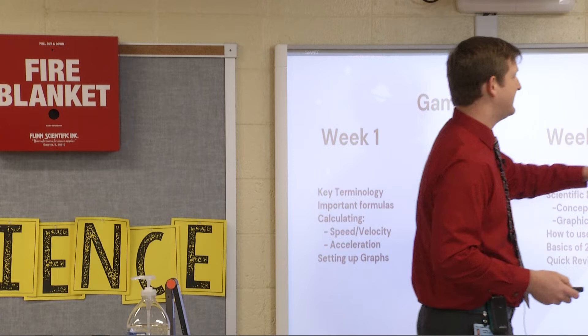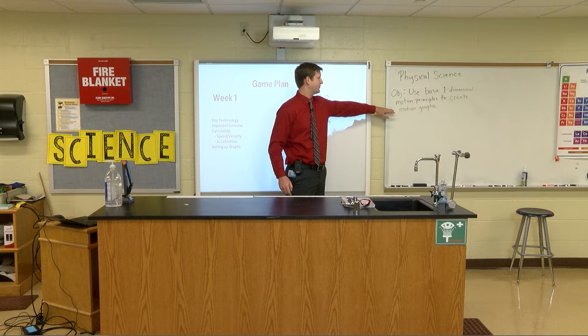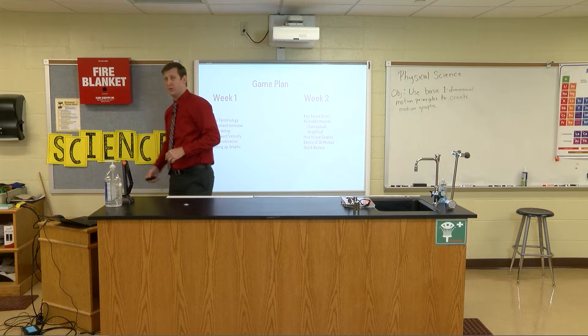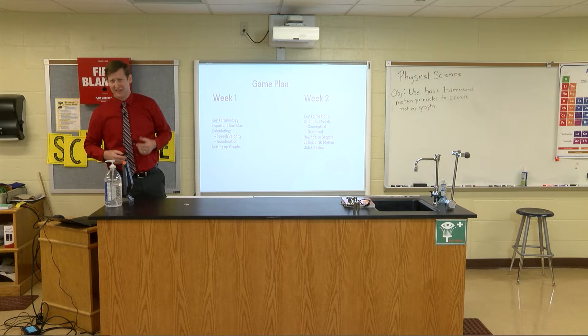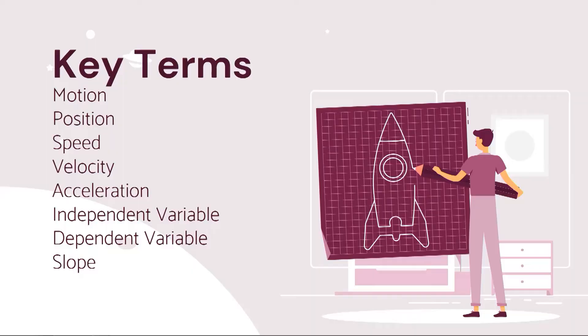Our objective today is to use basic one-dimensional motion principles to create motion graphs — and I want to emphasize basic. It's what you need to understand this packet and have a good concept of motion. The key terms I want you to write down are: motion, position, speed, velocity, acceleration, independent variable, dependent variable, and slope. Go ahead and take a couple minutes to write those down.